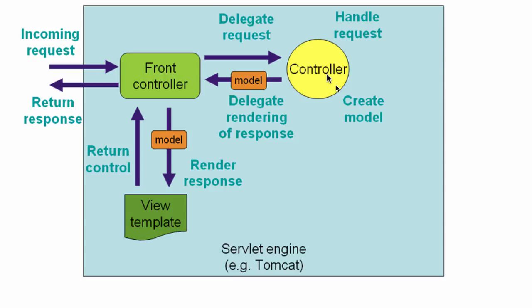The controller method would be executed, and then the controller can return back which view has to be rendered. The controller would tell the front controller which view to show — which JSP to show. In our case, the view we wanted to show was login.jsp, and the login controller sent back a string 'login'.